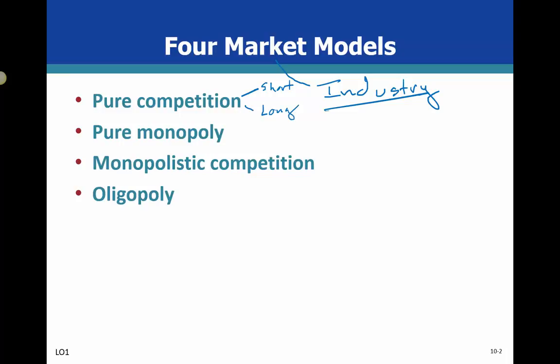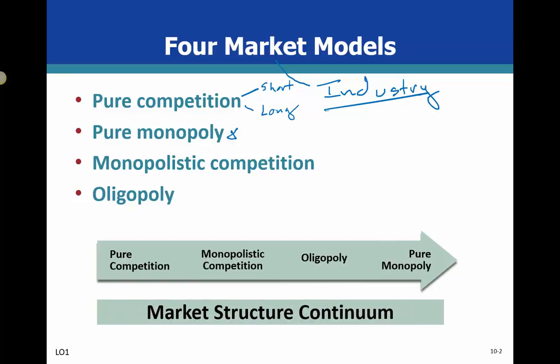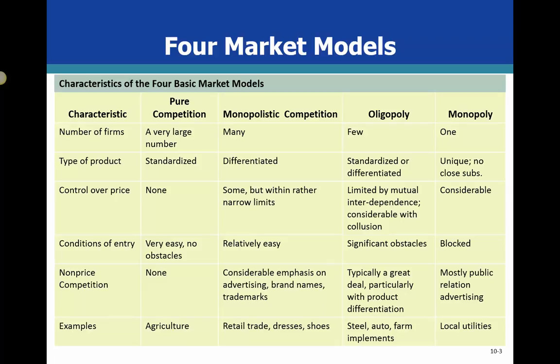Chapter 12 covers pure monopoly. Pure competition is divided into two segments: the short run and the long run. We need to talk about this continuum — on one end we have pure competition, and on the opposite side we have pure monopoly. The first two topics we'll cover are the ends of that continuum, and we'll also address some basic questions that the firm asks itself.